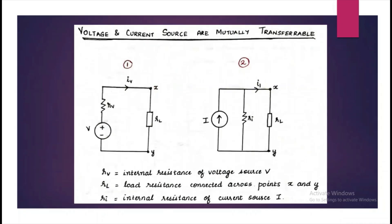This is an important derivation in network theory. We have to prove that a voltage source with internal resistance Rv in series can be converted into a current source with parallel resistance Ri. RL is the load resistance for both circuits.